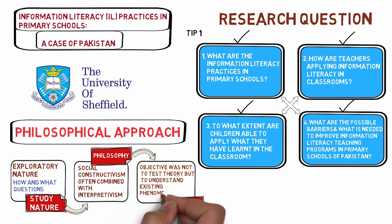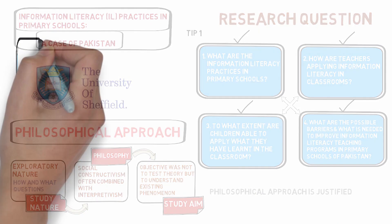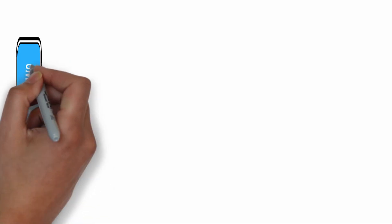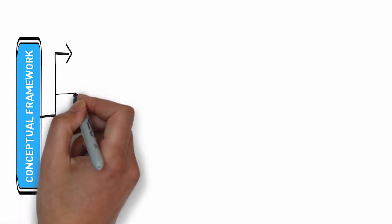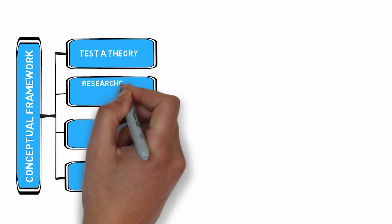The next important step is to understand the study's theoretical or conceptual framework. In my case, I don't have any theory to test, so I was interested to build a conceptual framework. According to Maxwell, there are four ways to develop a conceptual framework: for example, test a theory, researcher's own experimental knowledge, pilot and exploratory study, and thought experiments.